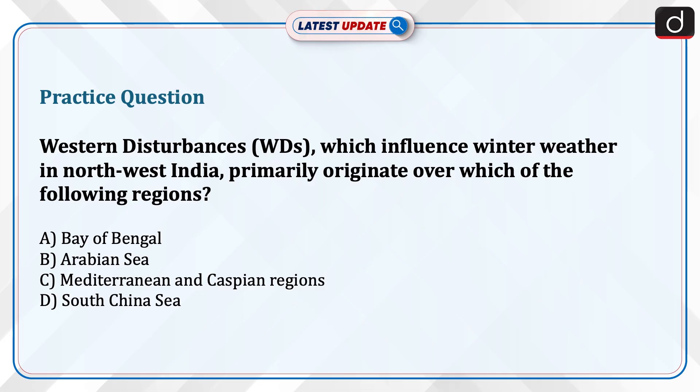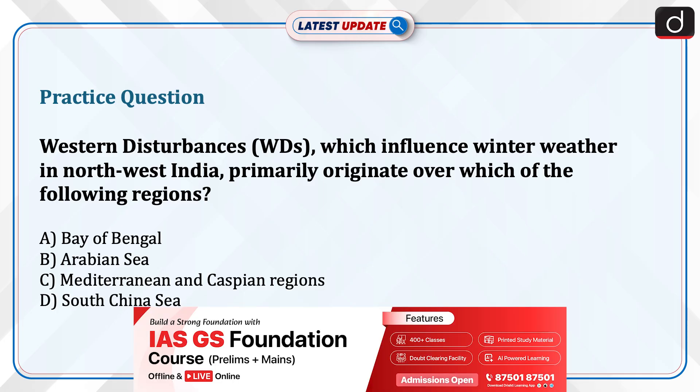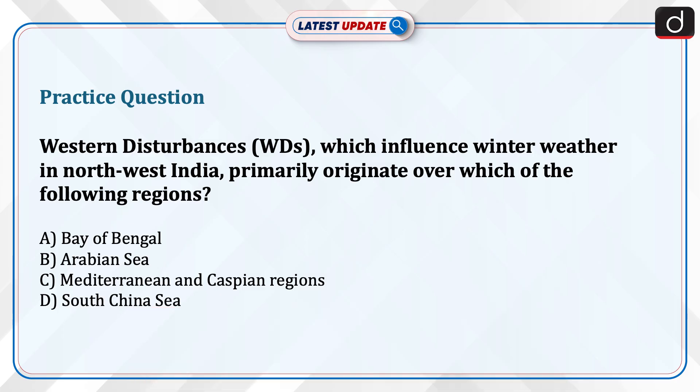Now it's time for a practice question. Western disturbances, which influence winter weather in northwest India, primarily originate over which of the following regions? A. Bay of Bengal, B. Arabian Sea, C. Mediterranean and Caspian regions, D. South China Sea. Send the answer for this question in the comment section. Thanks for watching.